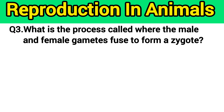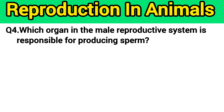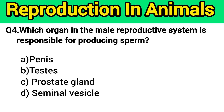Question number 3: What is the process called where the female and male gametes fuse to form a zygote? The right answer is option A — fertilization. Question number 4: Which organ in the male reproductive system is responsible for producing sperm? The right answer is option B — testes.